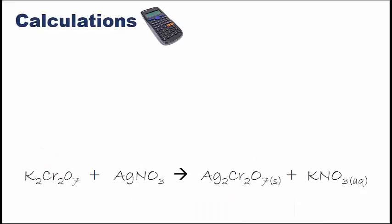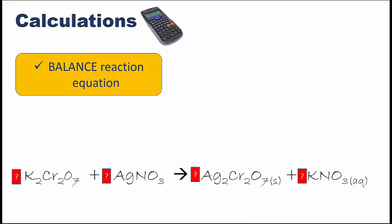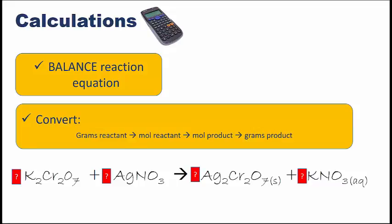To find the limiting reactant, you'll first need to balance the reaction equation. Then, you'll need to do some conversions in order to determine the limiting reactant and to predict the theoretical yield of the product. Remember that when we start with a mass in grams, we need to convert to moles in order to cross the mole bridge. In this reaction, we'll be given the grams of the reactants and we can figure out their molar masses in order to convert from grams to moles of reactant.